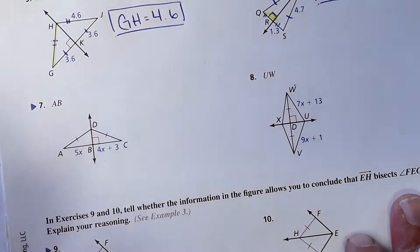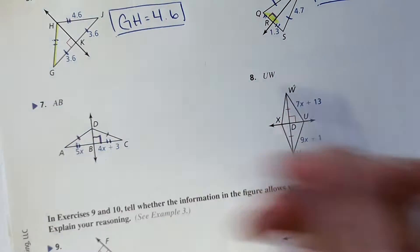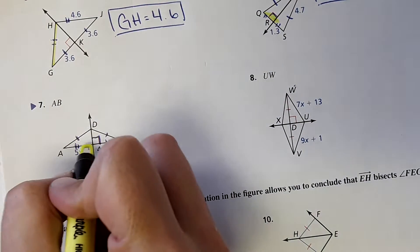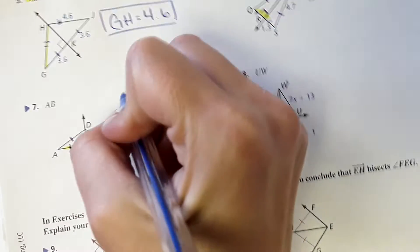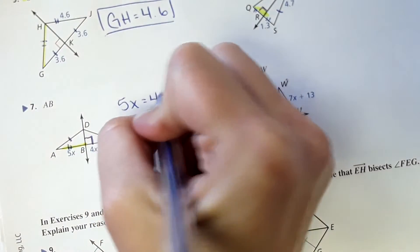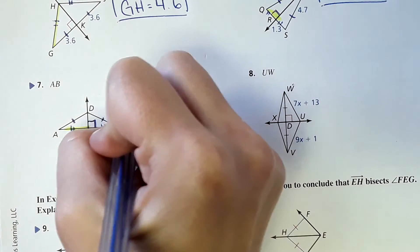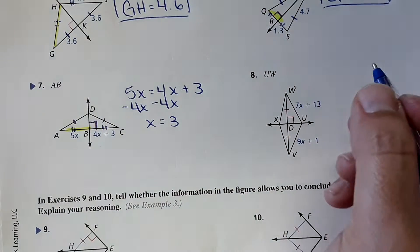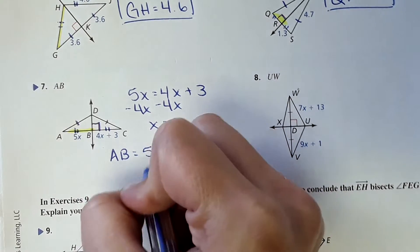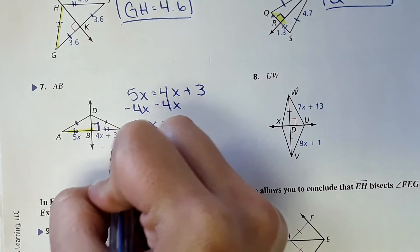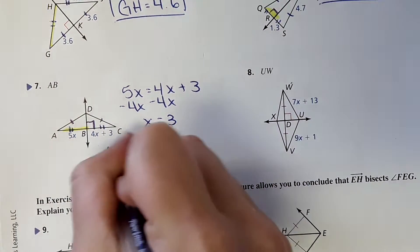Moving on, number 7. These are the same, we're perpendicular — that means that this length is the same as this one. We're given expressions and it wants to know the length of AB. In order to find that, we have to know the value of x, so we can set these equal to solve for x. We get x equals 3. And then AB is 5x, so we plug that in and get AB equals 15.